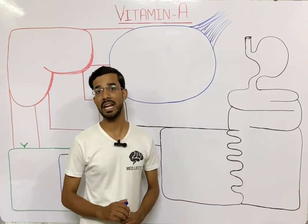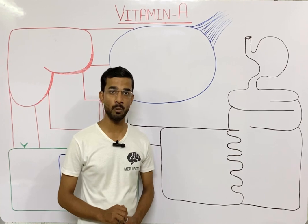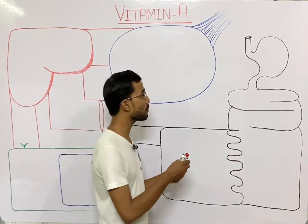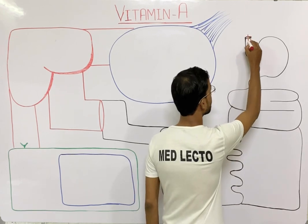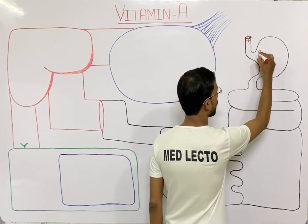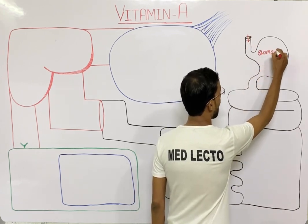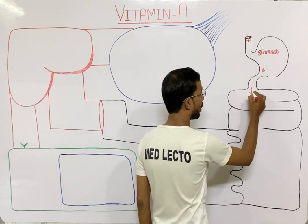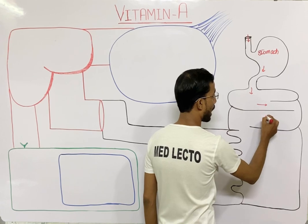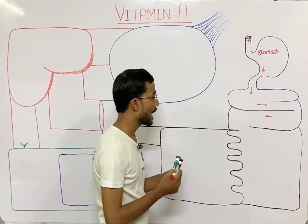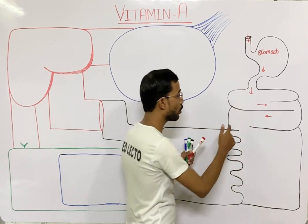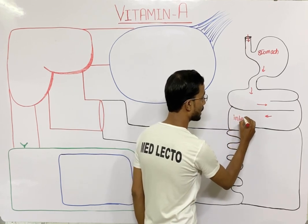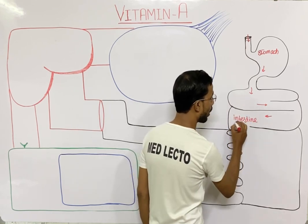When someone takes a diet containing Vitamin A, that diet moves from the esophagus into the stomach, and from the stomach it moves downward into the small intestine after digestion.